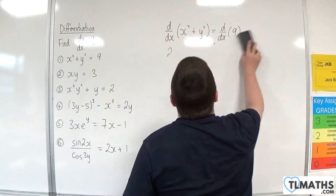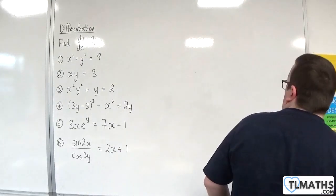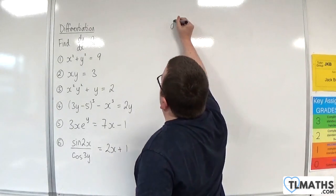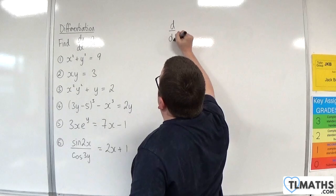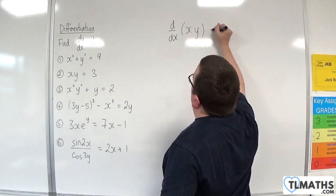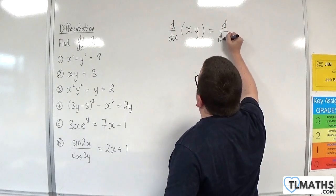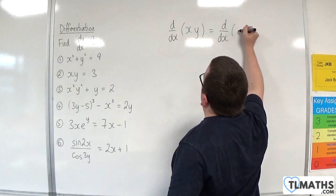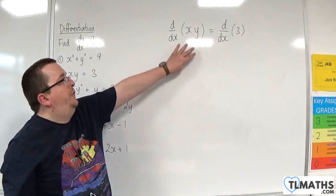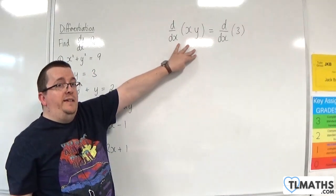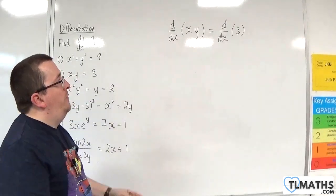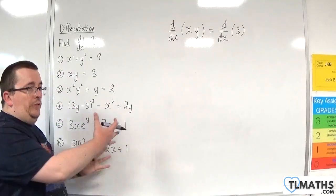Let's move on to number 2. I'm going to write d by dx of the left-hand side, x times y, is equal to d by dx of the right-hand side. For the left-hand side, x times y, I'm going to need to differentiate using the product rule because we've got the product of x and y.